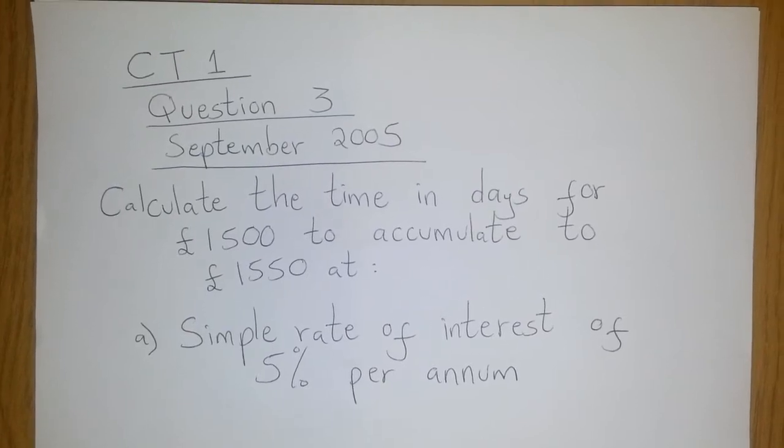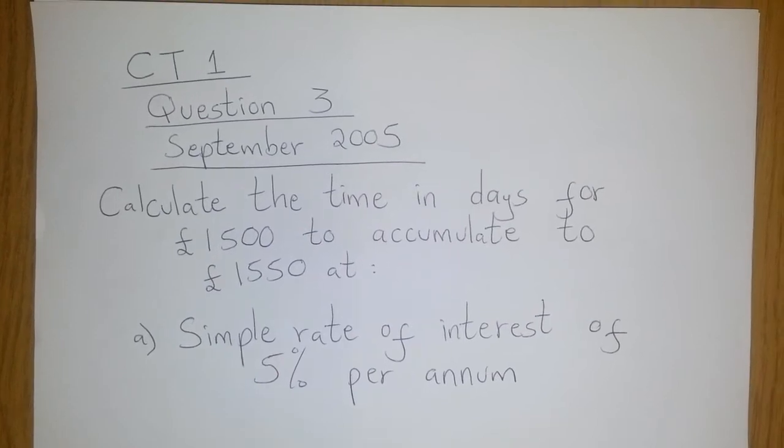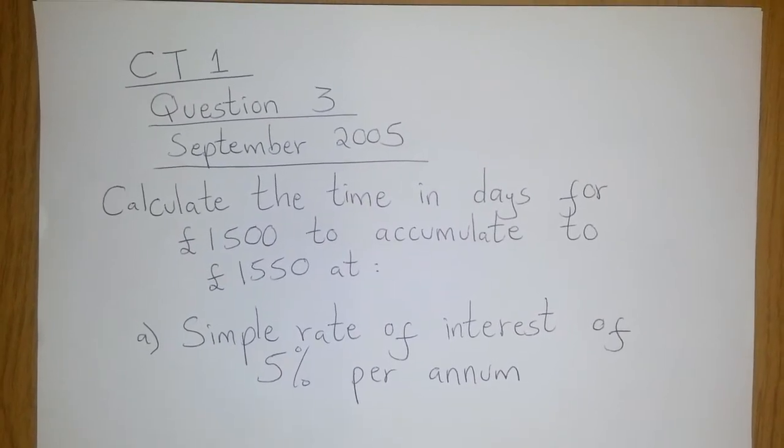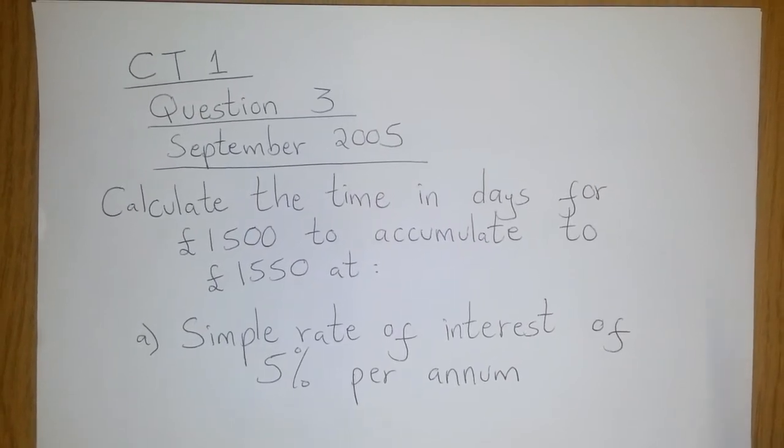Back to the question here. Calculate the time in days for £1500 to accumulate to £1550 at a simple rate of interest of 5% per annum.